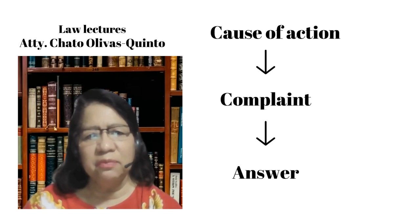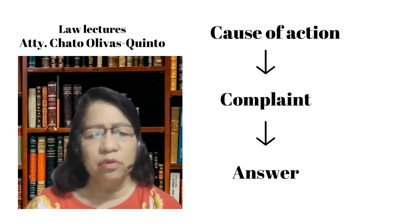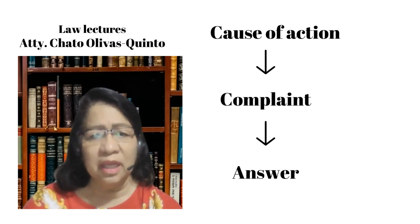I'd like to start with a simplified flowchart of an ordinary civil action. Note that this is very simplified, and the purpose is to give you the big picture. In the beginning, this flowchart may not make sense to you, but consider each part as a puzzle piece. As you go along, you'll be able to put the puzzle pieces together, and the whole picture will make sense. If you have questions, put it in the comment box, and I'll do my best to answer you promptly.